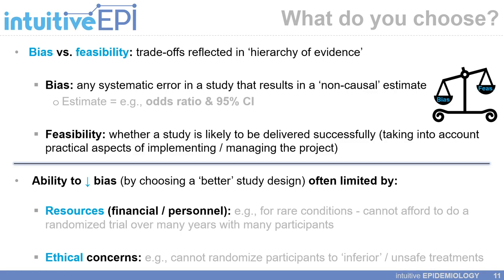Bias refers to any systematic error in a study that results in a non-causal estimate, such as an odds ratio and a 95% confidence interval. Feasibility refers to whether a study is likely to be delivered successfully, taking into account the practical aspects of implementing and managing the project. Our ability to reduce bias by choosing a better study design is often limited by resources — whether financial or otherwise — as well as ethical concerns, which are often raised in the context of randomized controlled trials.